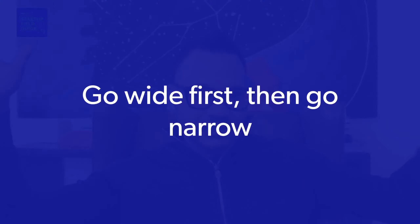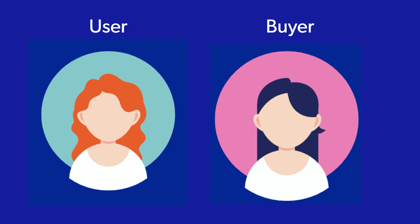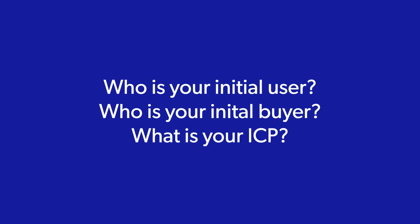You have to start wide and then go narrow. Initially you want to make sure you talk to customers in large enterprise, midsize, and small companies. You maybe talk to multiple personas on the user side and the buyer side. Before assuming everything, you'll obviously have a thesis around something, but you want to validate that. Then you want to start narrowing it down to who your initial buyer is.